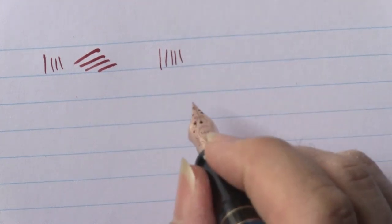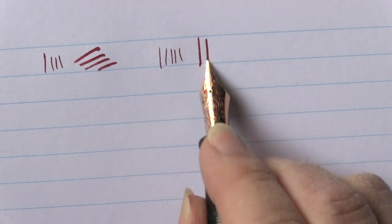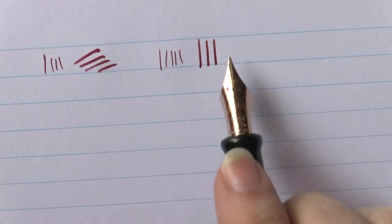With a zoom nib, it is possible to bring the writing closer, making the character larger and fuller. I will show you some examples.